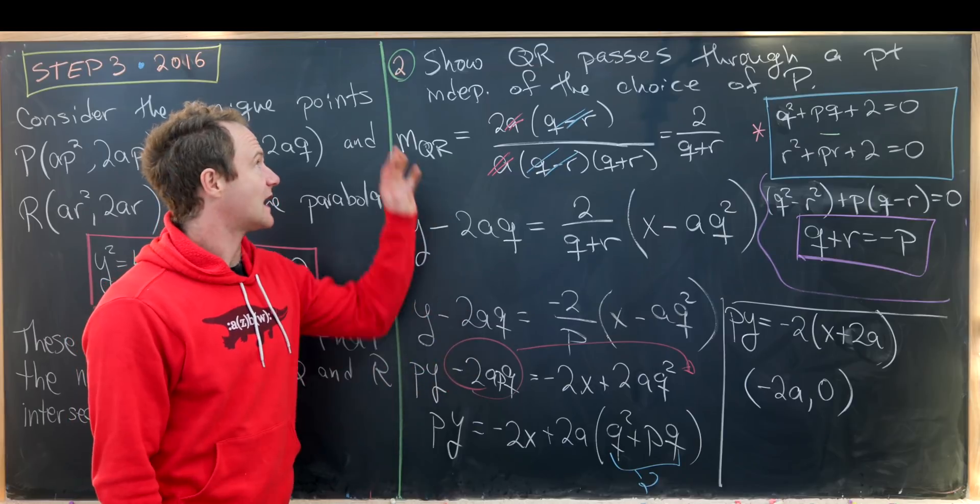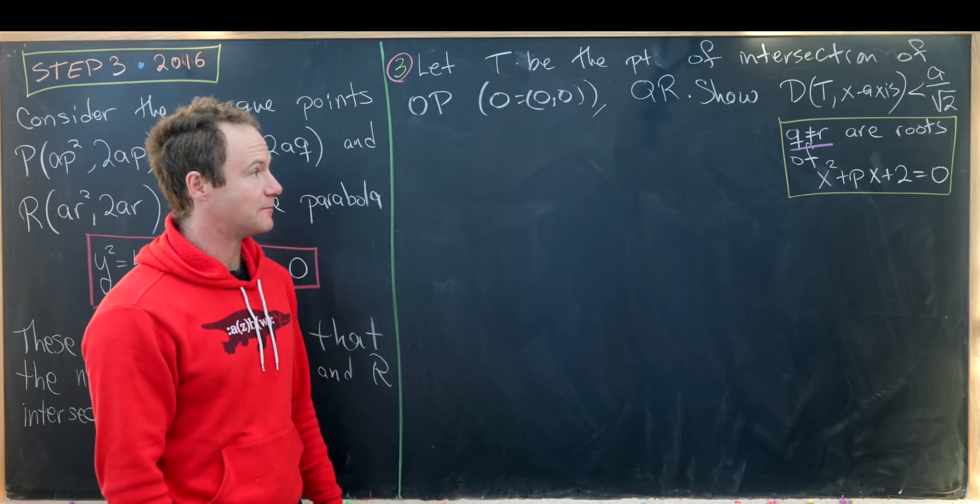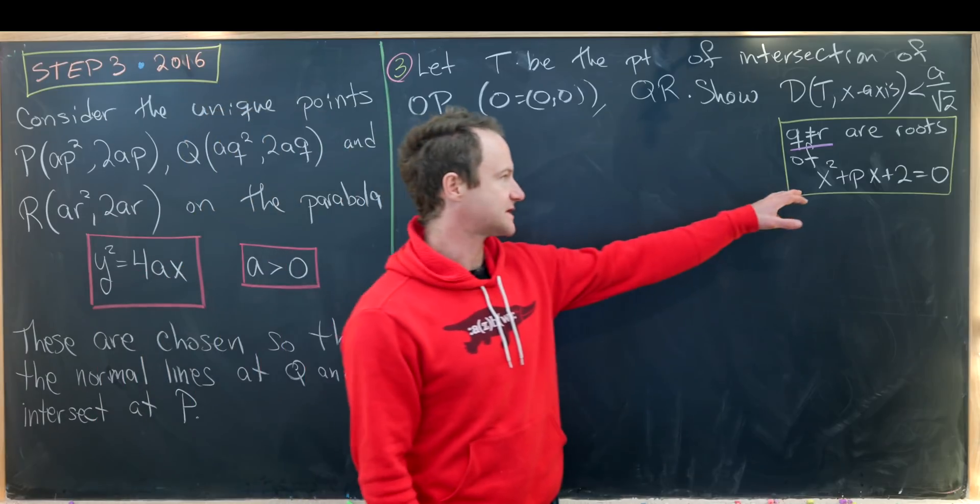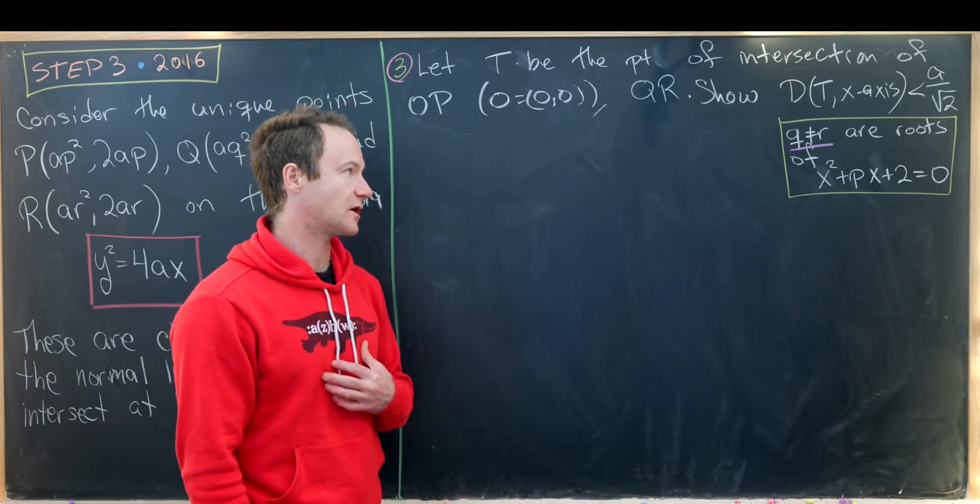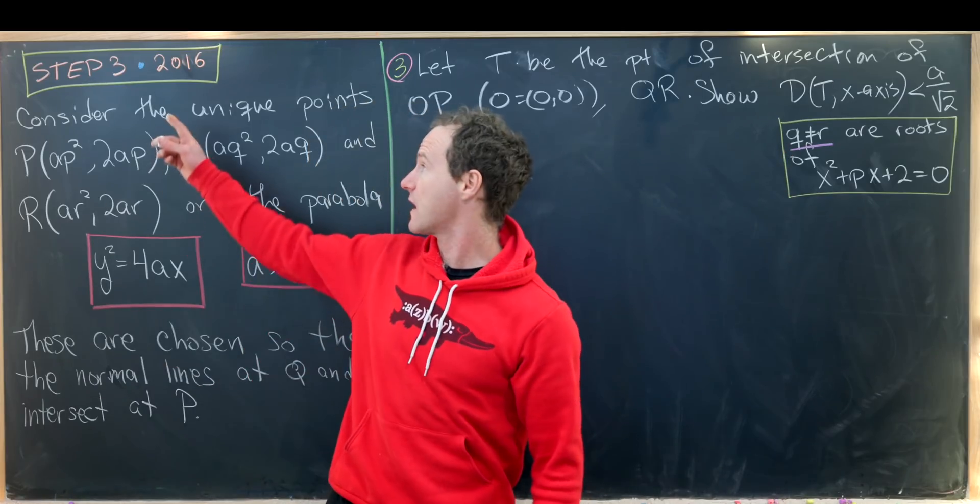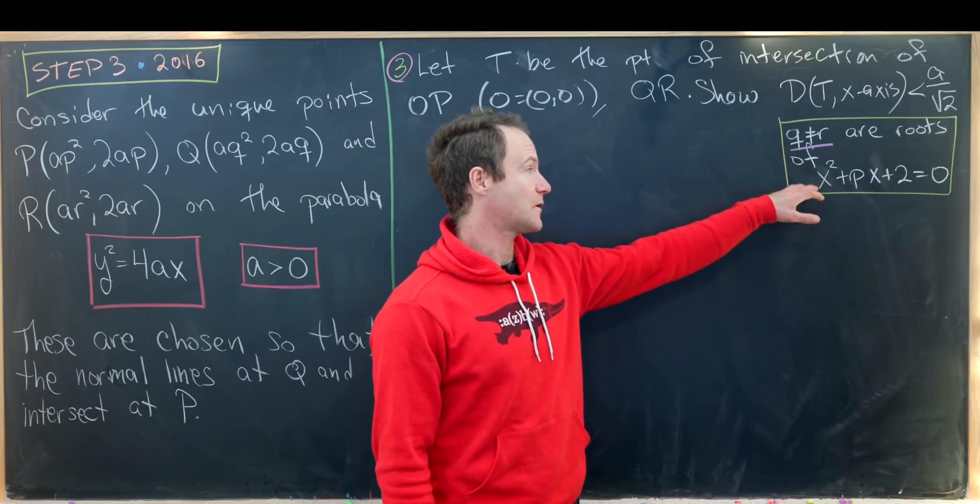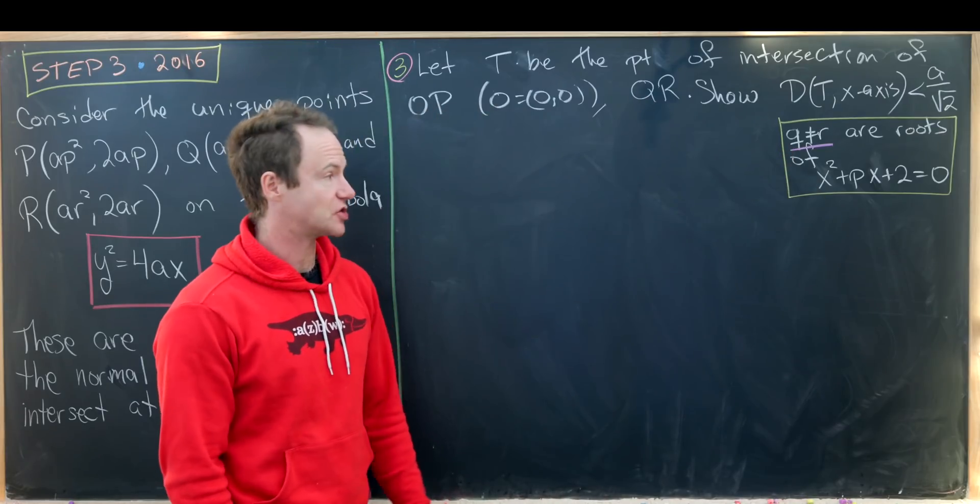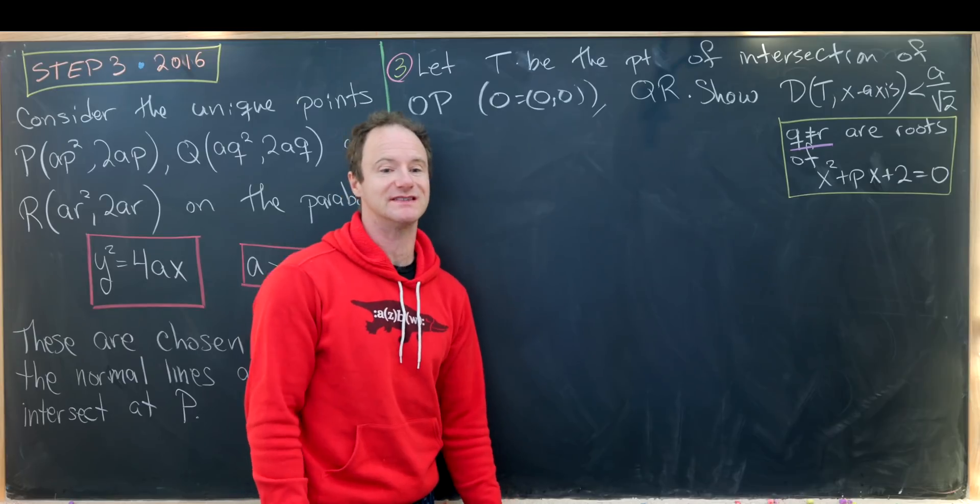Now let's look at the final part of this problem. Now we're ready to look at the last part. Before we do that let's recall something from the very first part which will be important. First of all Q ≠ R. We know that because of the uniqueness of these points.